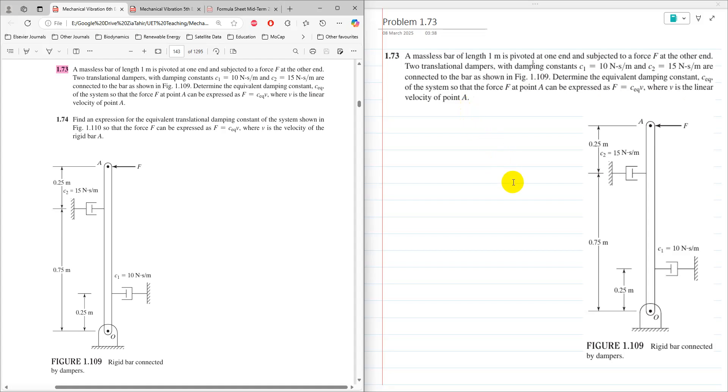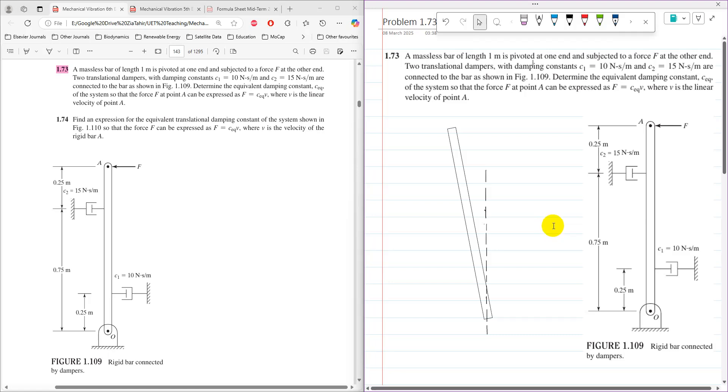To solve this problem, first we have to draw a free body diagram to see how velocities are produced in these two dampers when a force is applied. When force F is applied, it will have a small rotation theta.